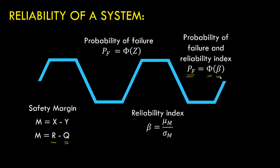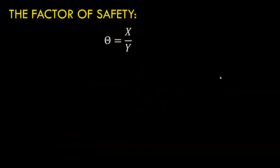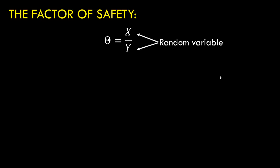In this video we will see how to calculate the factor of safety, which is another important measure for calculating the reliability or performance of the system. Factor of safety theta is given in terms of a ratio. If you see, safety margin is given in terms of a difference, but factor of safety is given in terms of a ratio, that is X divided by Y. Now, X is a random variable and Y is also a random variable, so one can expect that theta is also going to be a random variable.